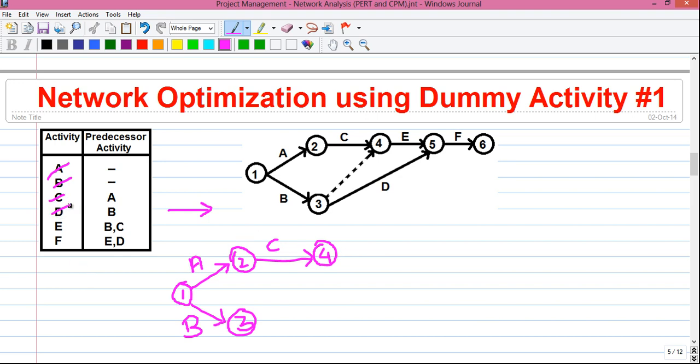Next, activity D. It has the predecessor activity of B. So it will start from event 3.